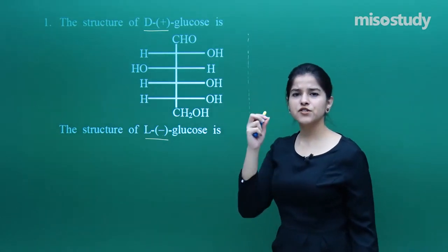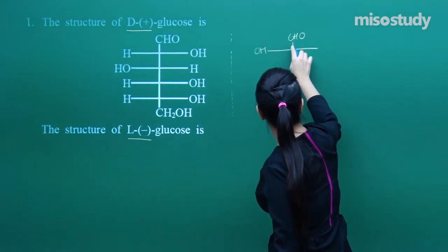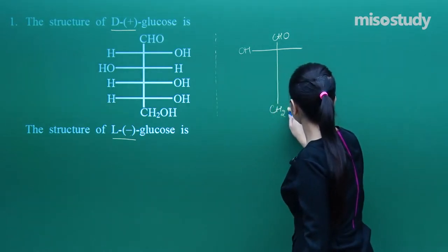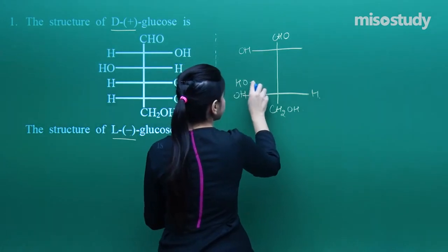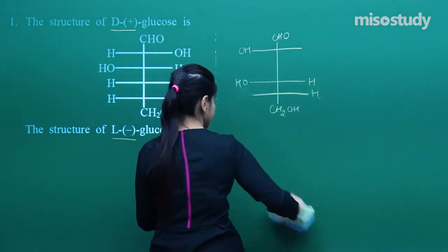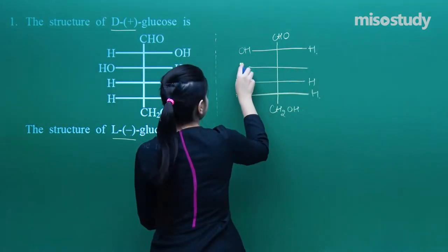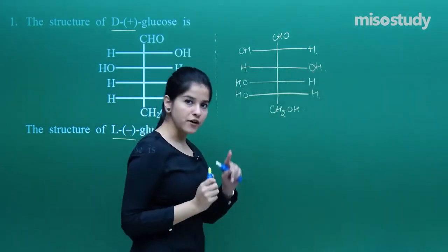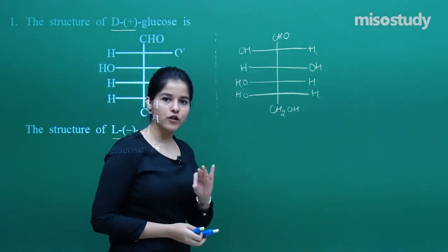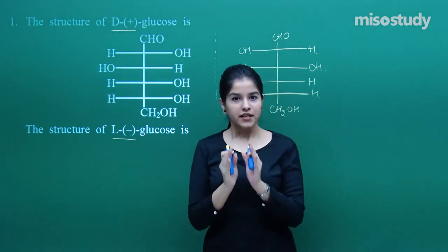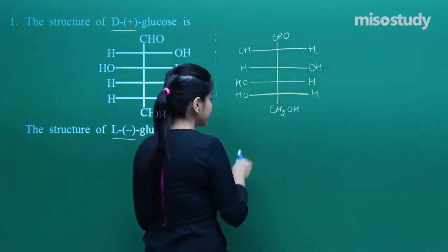You need not look at the options yet — just try to find out the answer first. You need to have a proper mirror image. That is how you are going to make it. The L configuration is implied due to the presence of the OH group on the left-hand side. This is also the enantiomer of the given compound, meaning the enantiomer always rotates the plane polarized light in the opposite direction. Earlier it was positive, so here the sign would be L-.